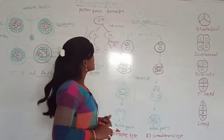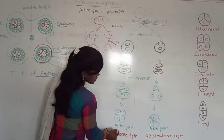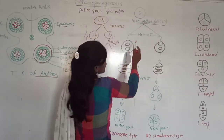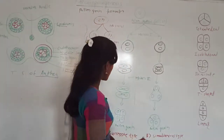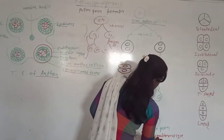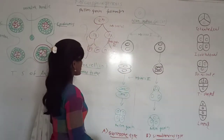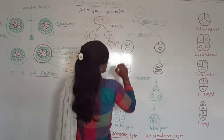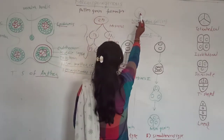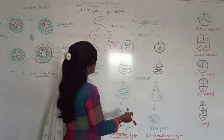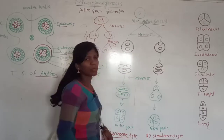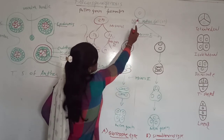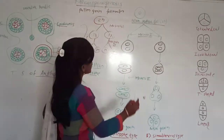Now let us see our main topic — how the pollen mother cell produces pollen grains, which is the process called microsporogenesis. The pollen mother cell undergoes meiotic division in two types: first is the successive type and second is the simultaneous type. In the successive type, the diploid pollen mother cell first undergoes meiosis I. In meiosis I, there is first a nuclear division called karyokinesis, and after that cytoplasm is distributed and a cell wall is formed.